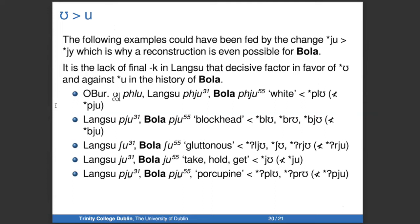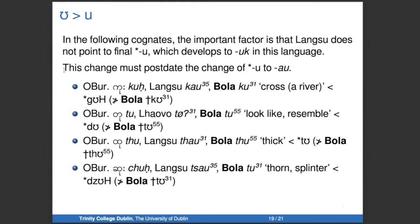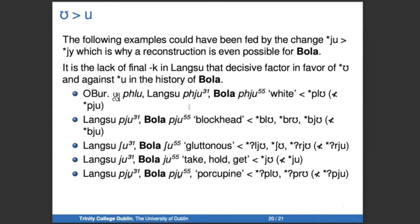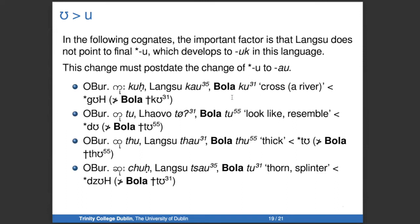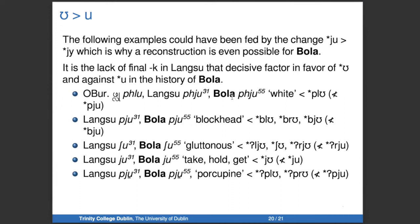The following examples could have been fed by the change of *y to *uu, which is why a reconstruction is possible for Bola without this proposal. The notation from the system is quite useful here — it's saying for some forms: 'I can't get the attested Bola form without this sound change,' while for others: 'I could get the attested Bola form, but it would have to come from a different proto-form than the one the other languages point to.' We need this sound change to get certain attested forms, and we need it for other forms to be cognate with the Old Burmese and Longsu forms.